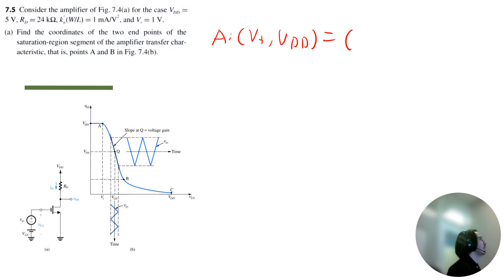So the coordinate for A is simply VT, which is 1 volt, and VDD, which is 5 volts. Now for B, we can see that at B, we're at this point here. For the VGS axis, we can call it V overdrive at B. So B for VGS, that's going to be the threshold voltage plus V overdrive at B.